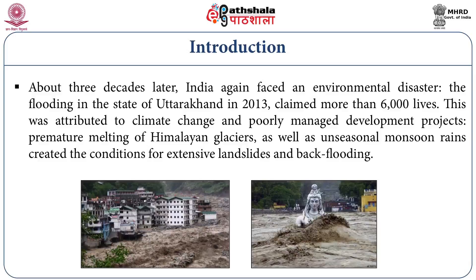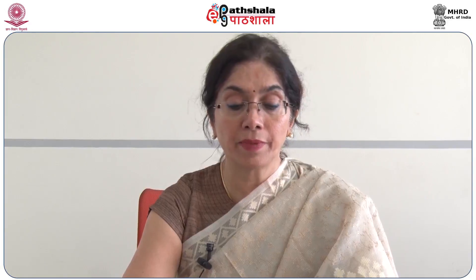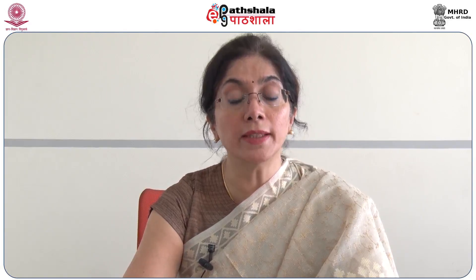About three decades later, there was another environmental disaster in India. This was the flooding in the state of Uttarakhand in 2013, claiming more than 6,000 lives. This was attributed to climate change and poorly managed development policies, premature melting of the Himalayan glaciers, as well as unseasonal monsoon rains creating conditions for extensive landslides and back flooding. The situation was exacerbated by multiple dams, haphazard diversion of rivers, and illegal tourist and other development along the riverbanks. The need to understand and manage environmental risk to morbidity and mortality, and create legal and policy frameworks to safeguard against rampant flouting of environmental safety measures is now the need of the hour.